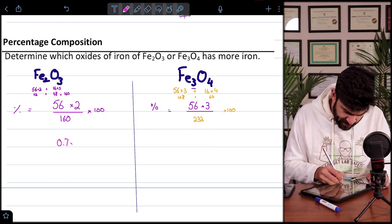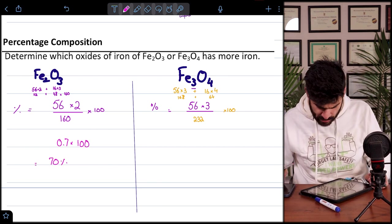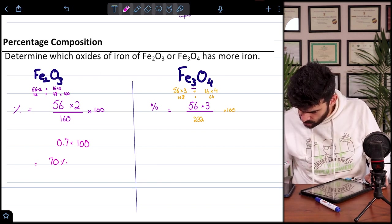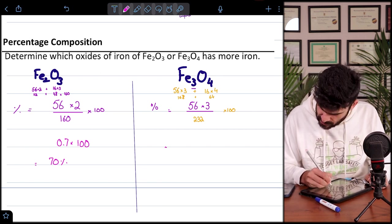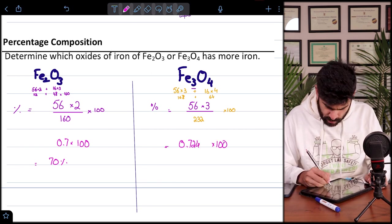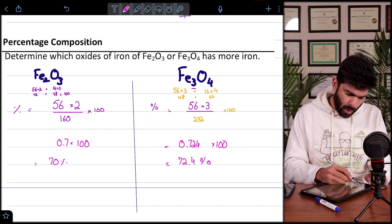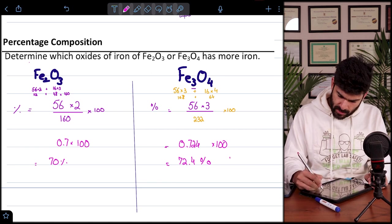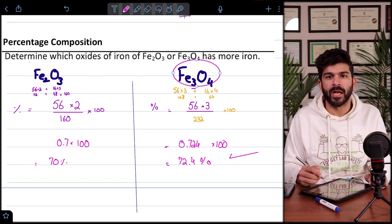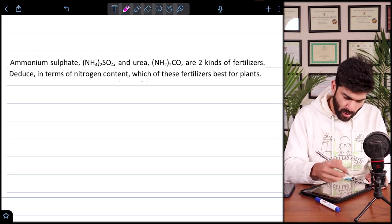So now let's see which has more percentage composition of iron. This is 0.7 multiplied by 100 and that makes it 70 percent. Talking about this one, this becomes 0.724 into 100, so that becomes 72.4 percent. So obviously we know that Fe3O4 has more amount of iron present in it.